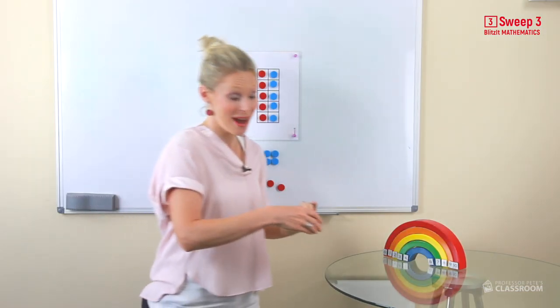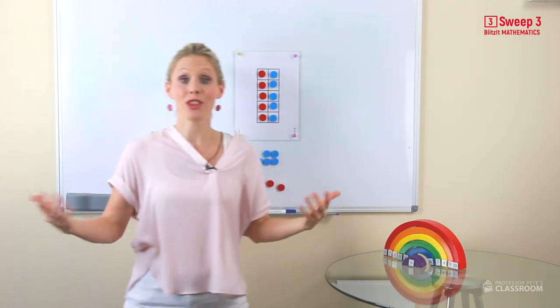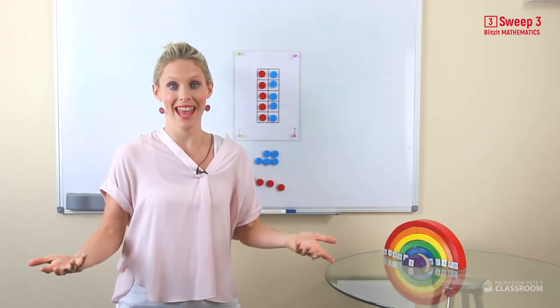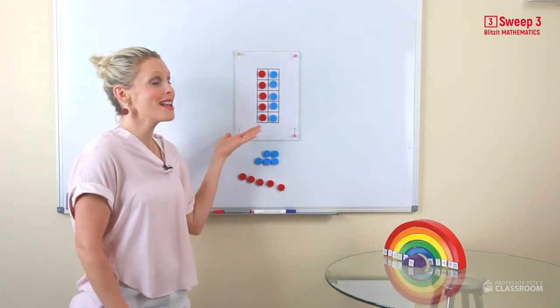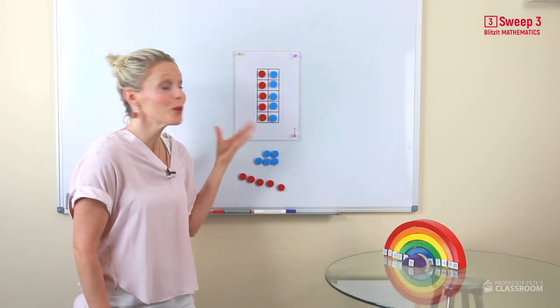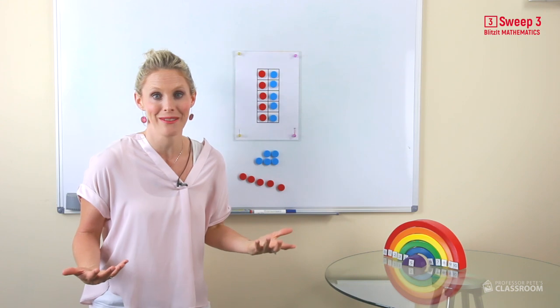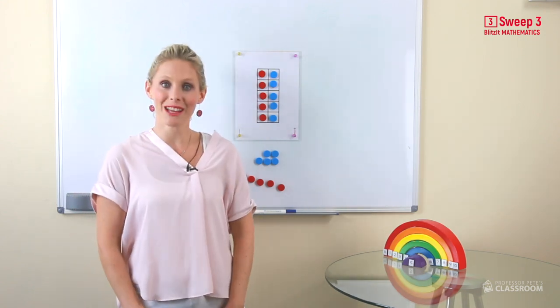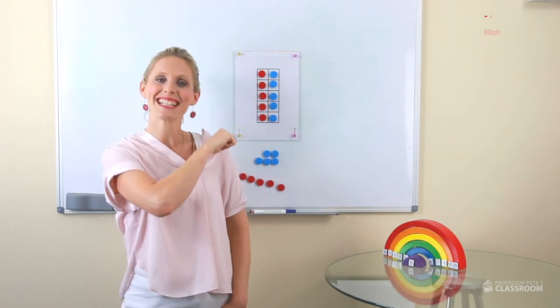These are our rainbow number facts. The two numbers, when added together, that equal 10. So easy to see and once you do it lots and lots on the tens frame, you'll be able to see it in your imagination. Go for it clever kids. See you next time.